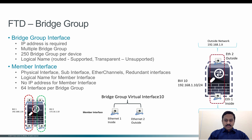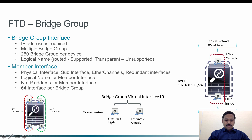To summarize: a bridge group is a virtual interface and each bridge group should have an IP address. You can have multiple bridge groups on a device. Each bridge group will have one or more member interfaces — those member interfaces can be physical interfaces, sub-interfaces, EtherChannel interfaces, or redundant interfaces. Each member interface should have a logical name defined.